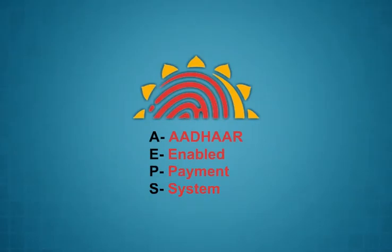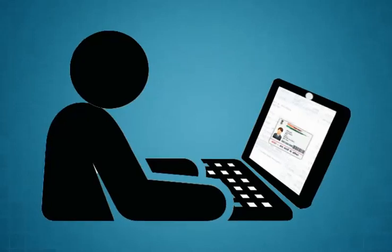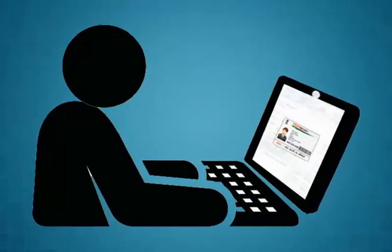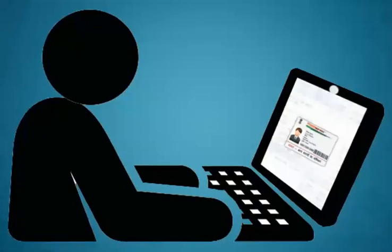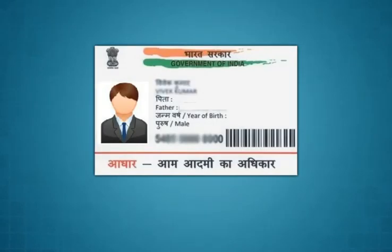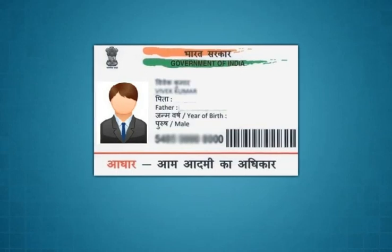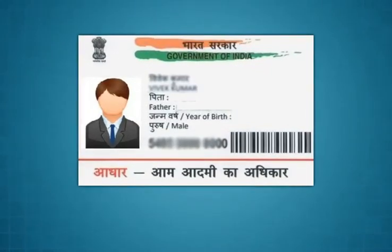AEPS stands for Aadhaar Enabled Payment System. This service empowers a bank customer to use Aadhaar as their identity to access their respective Aadhaar-enabled bank account and perform basic banking transactions. It allows bank-to-bank transactions at POS or micro-ATM with the help of a Banking Correspondent (BC) or VLE. The user has to seed their account with their Aadhaar number at the bank or with the help of a BC or VLE. A user can do as many transactions at any AEPS point without any PIN or password.